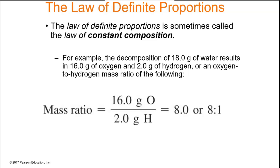Here's an illustration of the law of definite proportions: there is a definite mass ratio between different elements in a compound. For water, there are 16 grams of oxygen and only 2 grams of hydrogen in one mole of water — that's one oxygen for every two hydrogens. We'll get to moles, grams per mole, and molar mass in a few minutes.